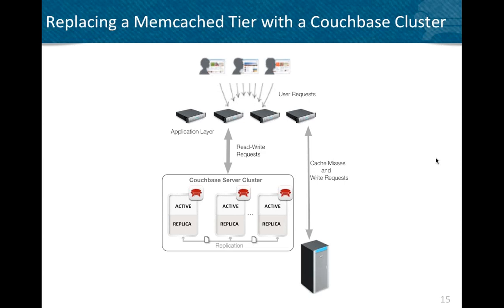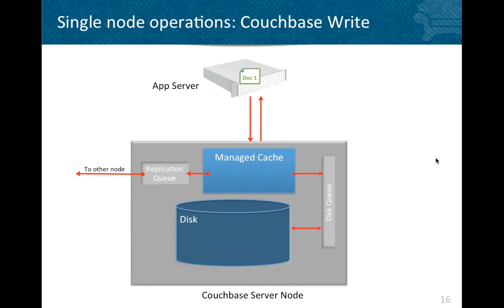If you replace the Memcached tier with Couchbase Server, you'll have pretty much the same architecture: front-end users send requests to the application layer, which talks to the back-end Couchbase Server nodes. The key difference is that with Couchbase Server you have a clustered solution — nodes have knowledge about each other. They are independent but connected through replication.